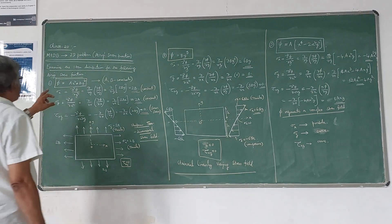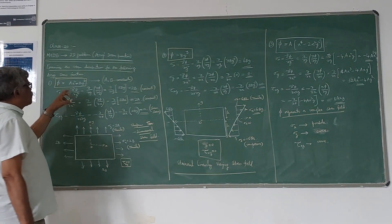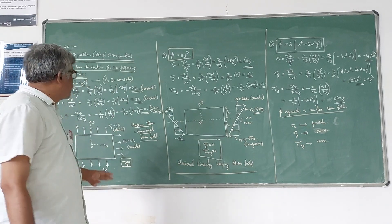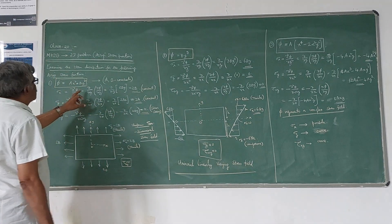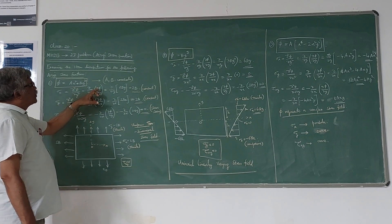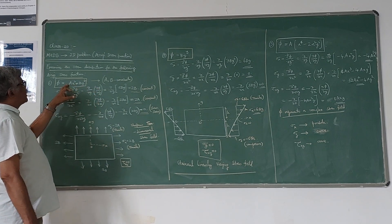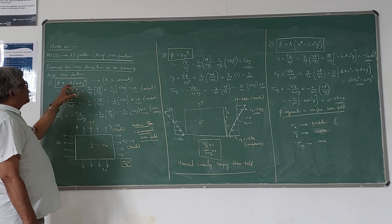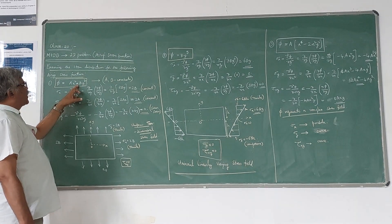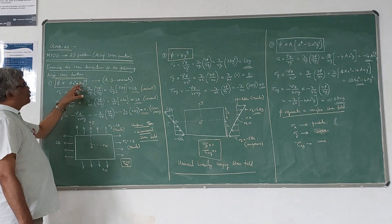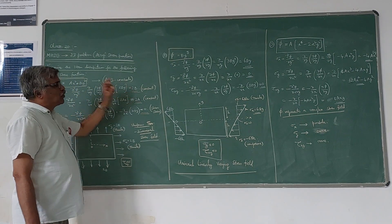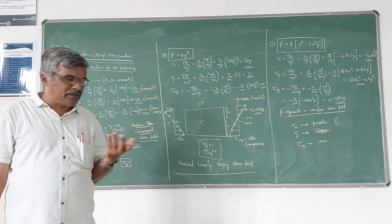If you differentiate φ with respect to y twice, you get σx. So ∂φ/∂y means differentiating with respect to y, treating x as constant, giving 2by. Differentiating once more gives 2b, which is a constant.